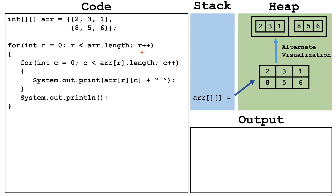Now let's look at some code for traversing an array. You can see our outer for loop covers the rows and the inner for loop covers the columns. In Java we say 2D arrays are row major. That means the first number will tell the row we want, or instead of the row you can think of it as the outer array. And the second number will tell us the column we want, or if you're visualizing like this, what index on the inner array.